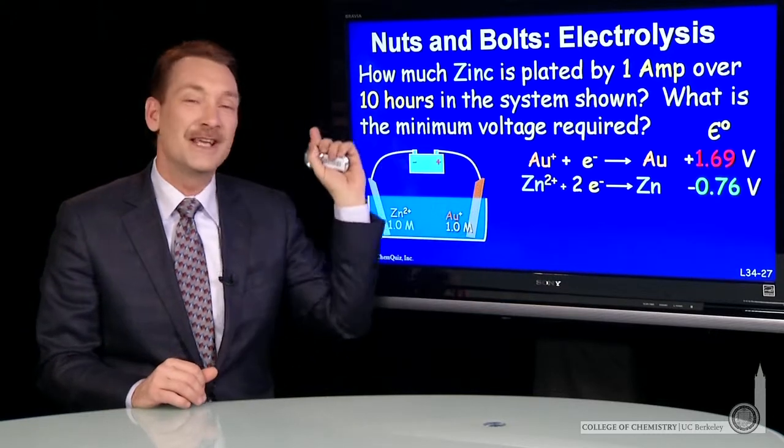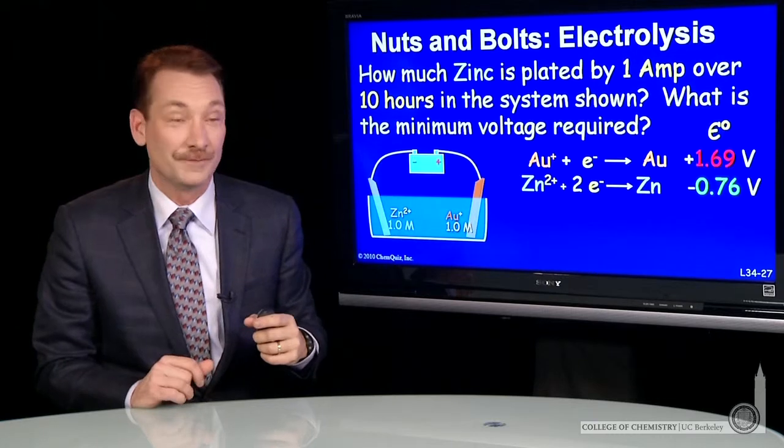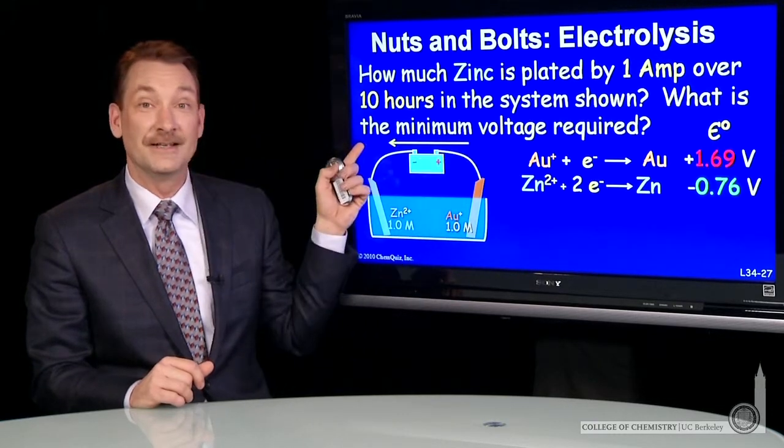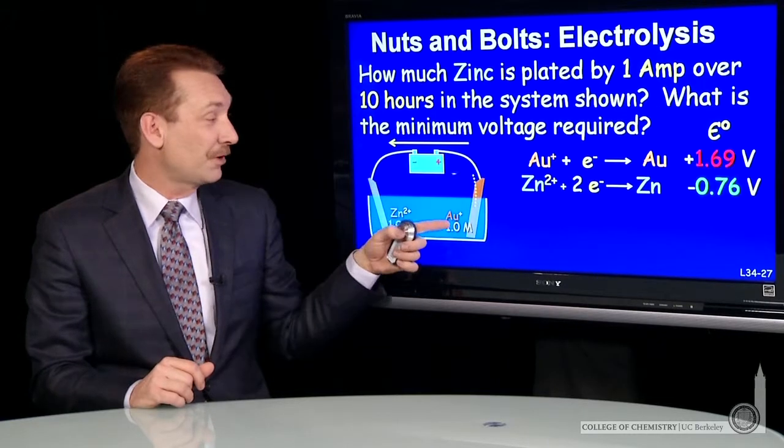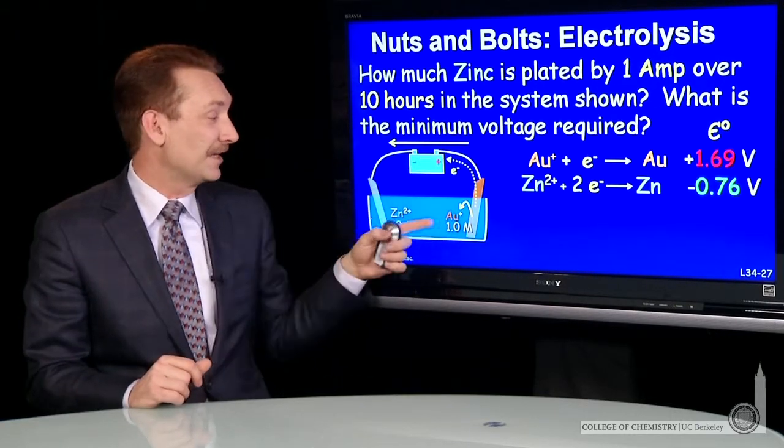We're going to make this go in the electrolytic direction, though, by providing an external voltage. So the external voltage will force electrons in this direction. So electrons will flow from the gold electrode to the zinc electrode.